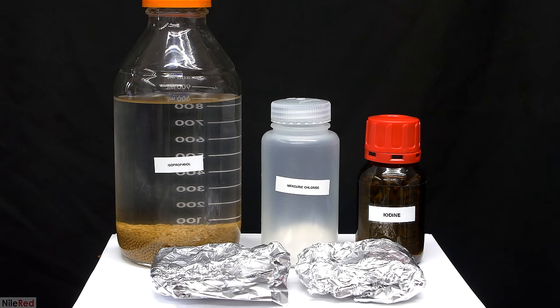To prepare the aluminum isopropoxide, we need isopropyl alcohol, mercuric chloride, iodine, and aluminum foil. In total, I used about 300 milliliters of isopropanol, 0.2 grams of iodine, 27 grams of aluminum foil, and 1.65 grams of mercuric chloride.